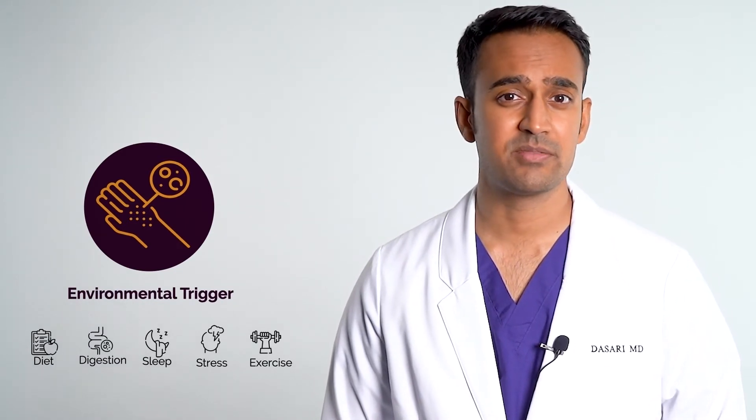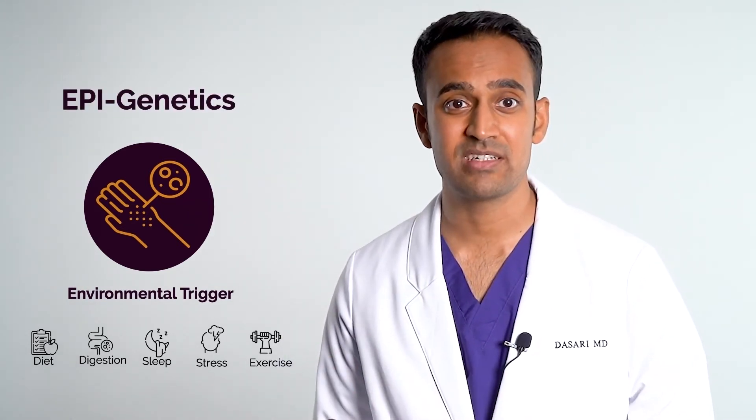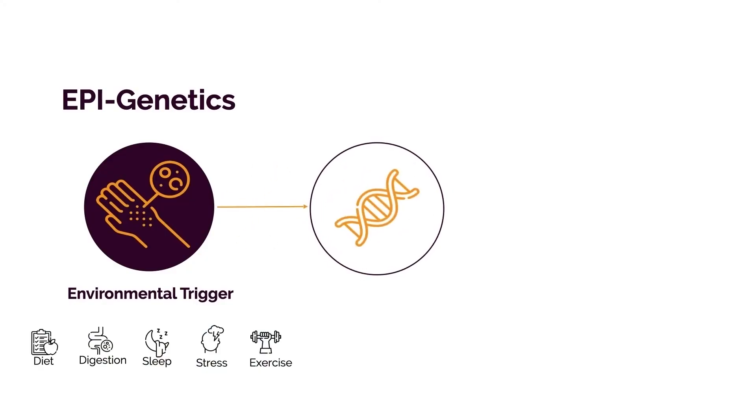These environmental triggers are collectively referred to as epigenetics. The prefix 'epi' denotes a higher position, because epigenetics control genetics. In reality, it's epigenetics — not genetics — that really matters, because these are all things within our control that can directly impact how much inflammation we have in our body. This course is designed to leverage these five key elements and maximize them in order to heal the body.